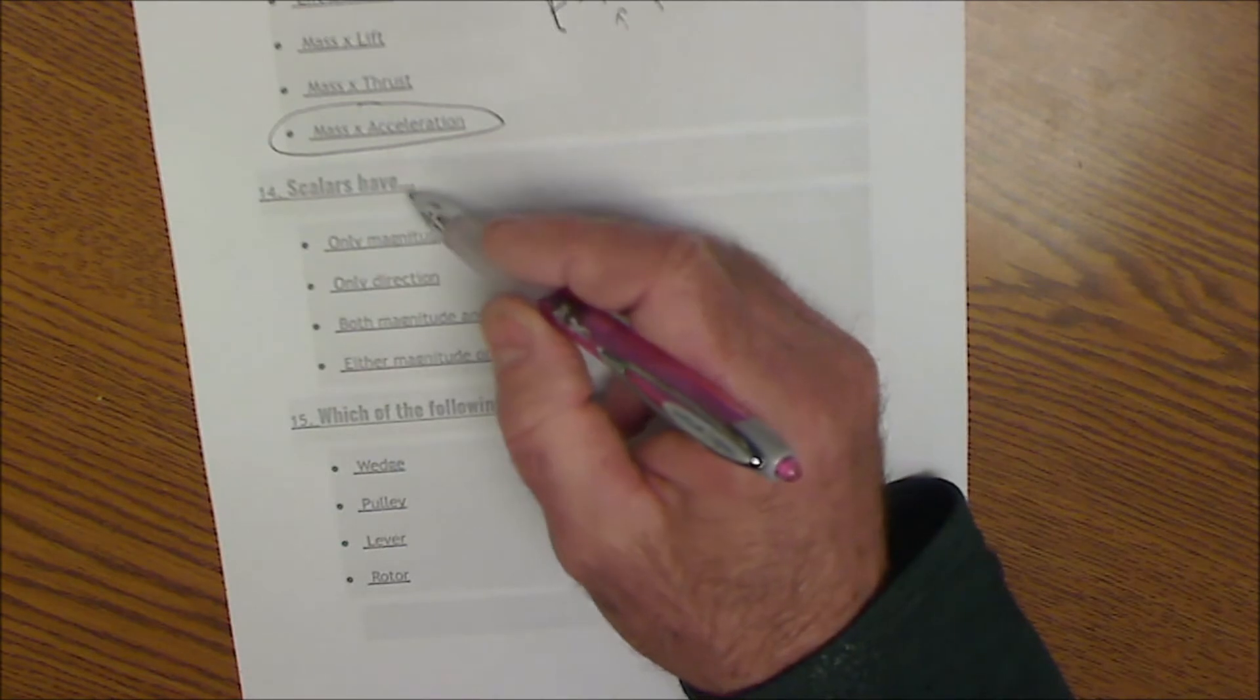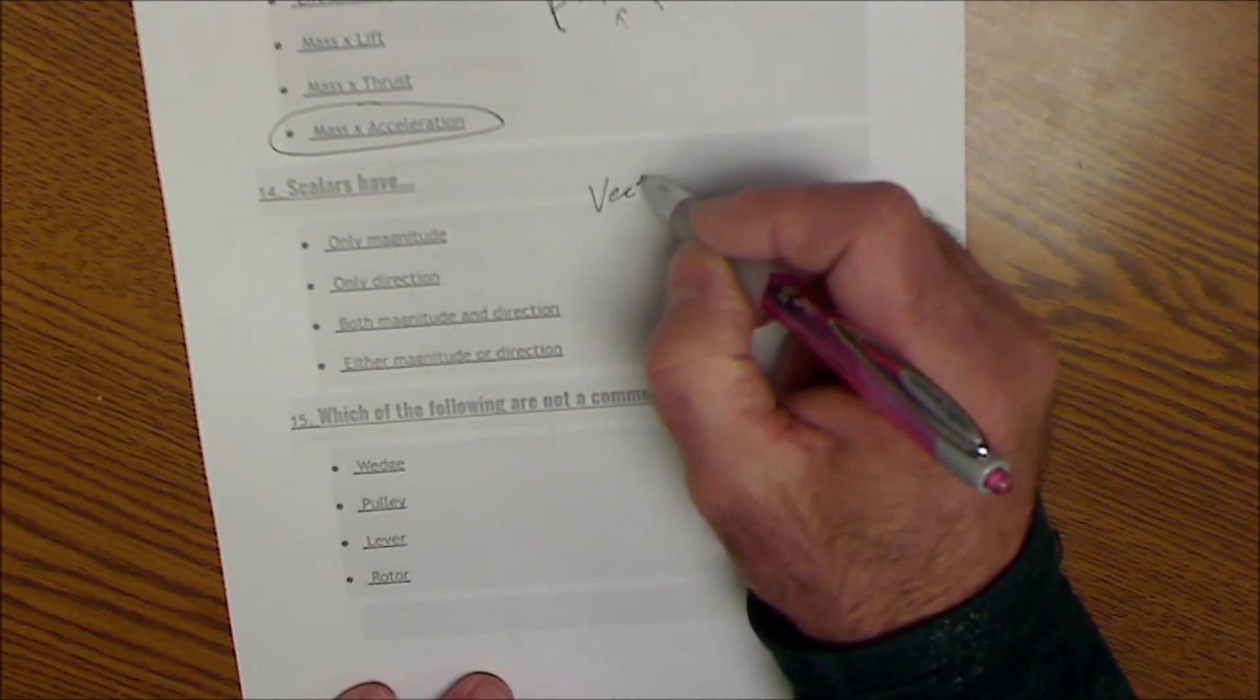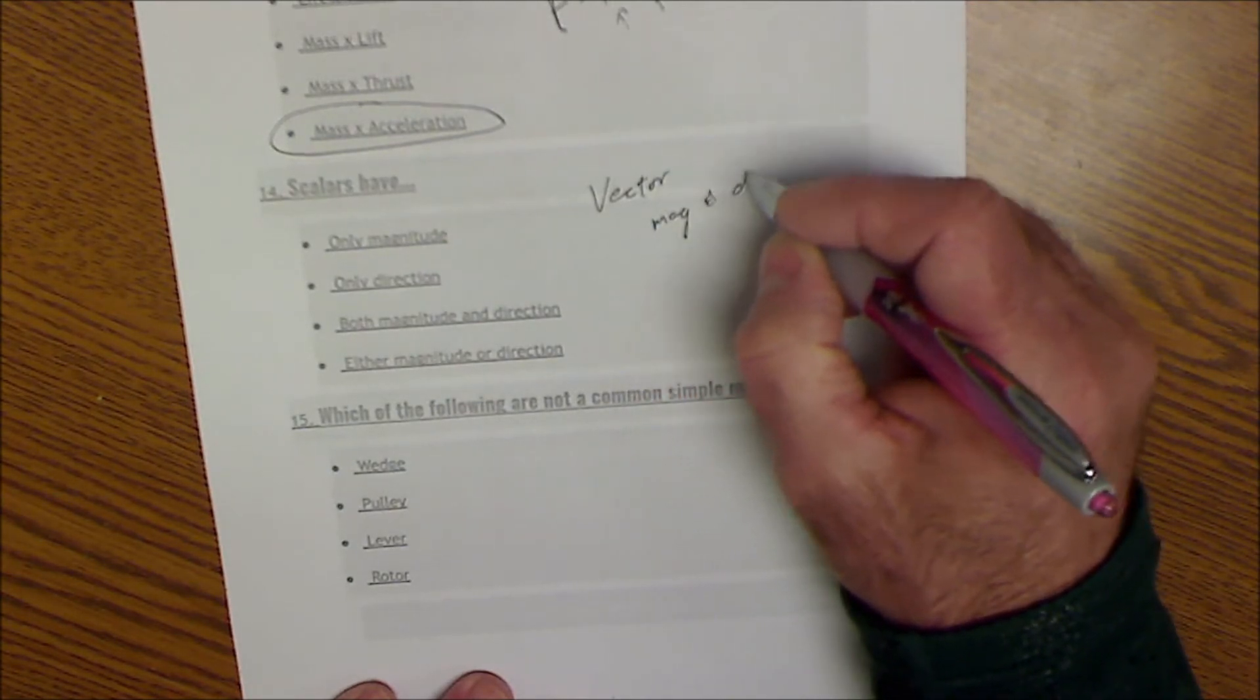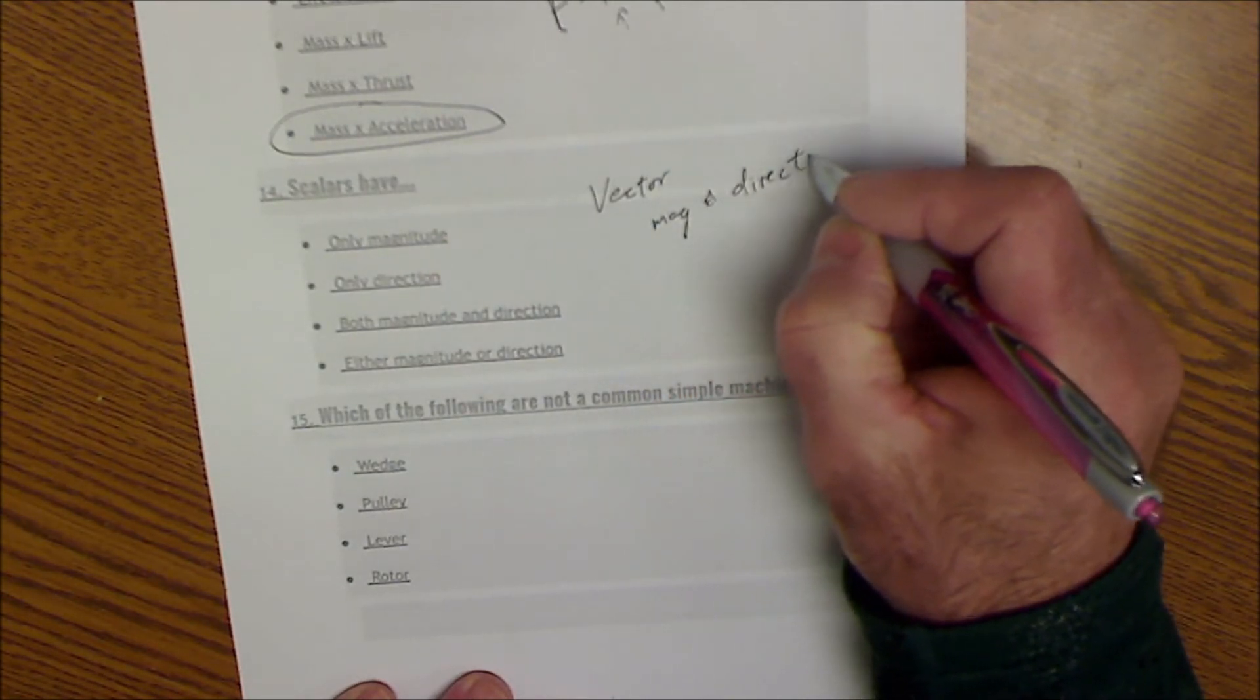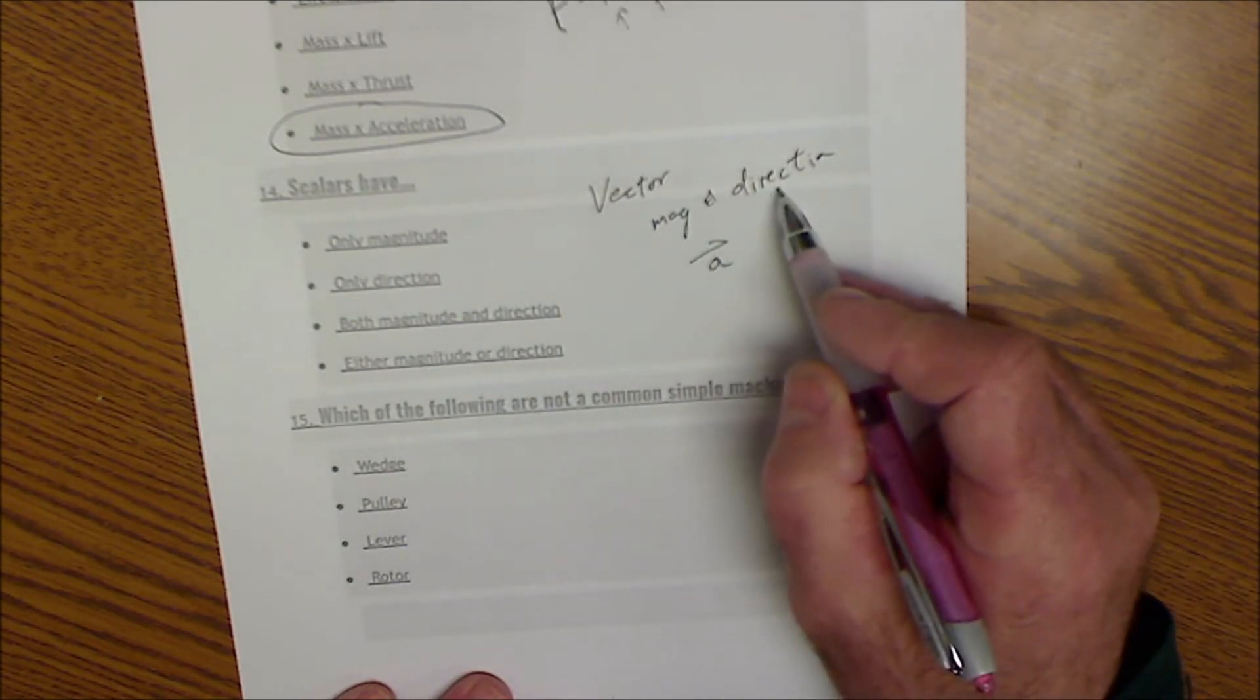Scalars. This is a vector problem. A vector has two components. Both magnitude and direction. So usually you represent a vector with a lowercase letter and an arrow over it, saying it has both magnitude and direction.